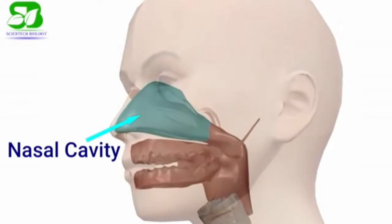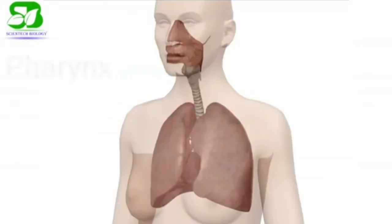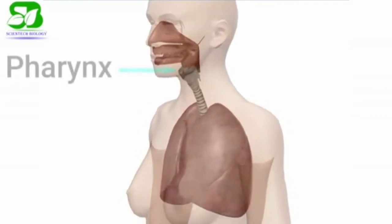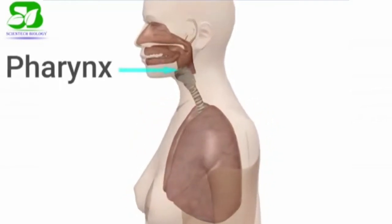The respiratory organs are all in the cell cavities. The nasal cavity, pharynx — the nasal passages lead into the pharynx structure.